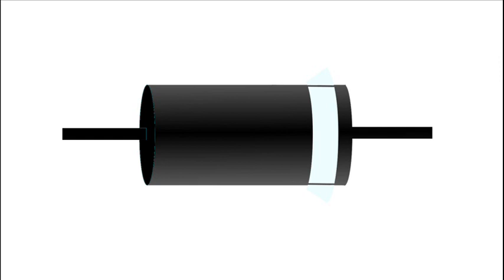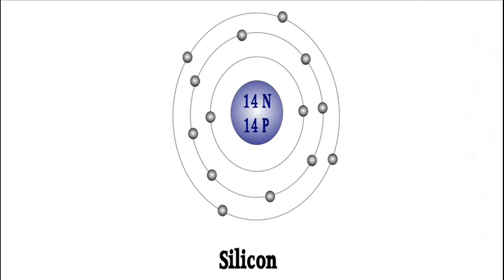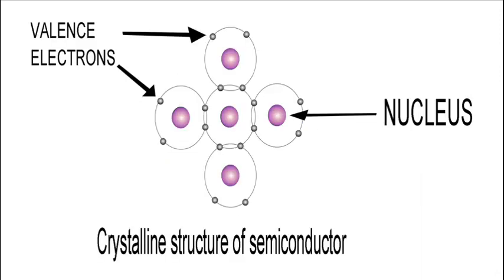The PN-junction diode is formed by joining semiconductor materials, such as silicon. The atomic scale structure of silicon is shown here.